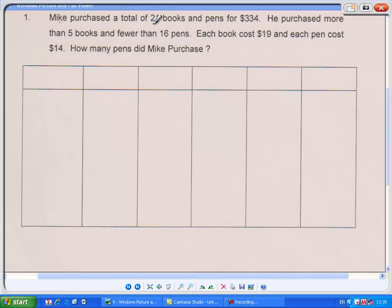Mike purchased a total of 21 books and pens for $334. He purchased more than 5 books and fewer than 16 pens. Each book cost $19 and each pen cost $14. How many pens did Mike purchase?